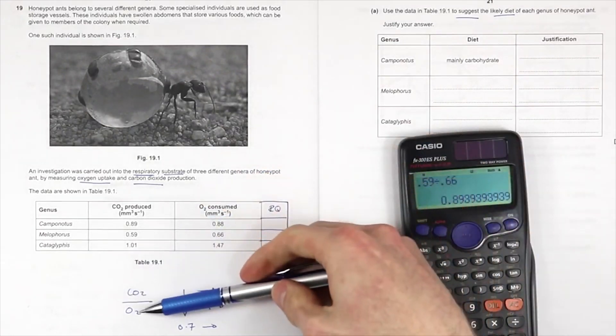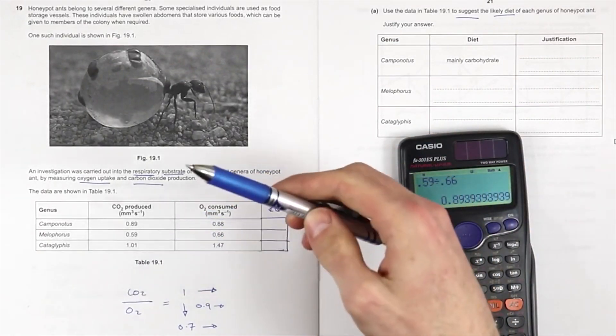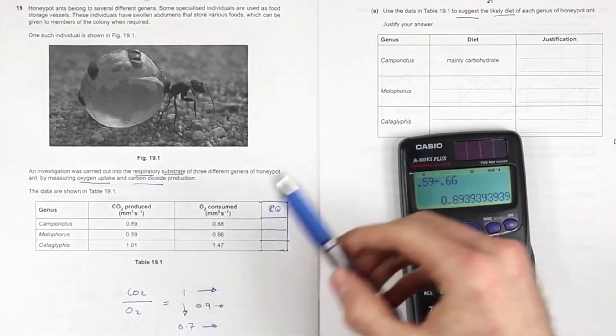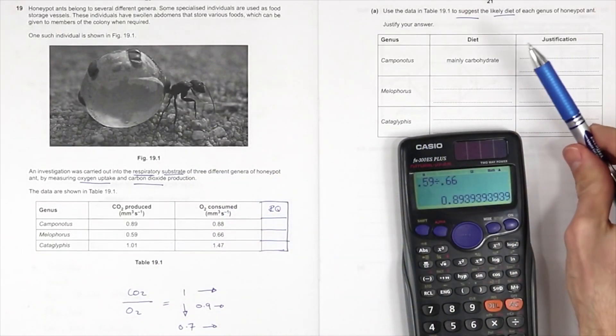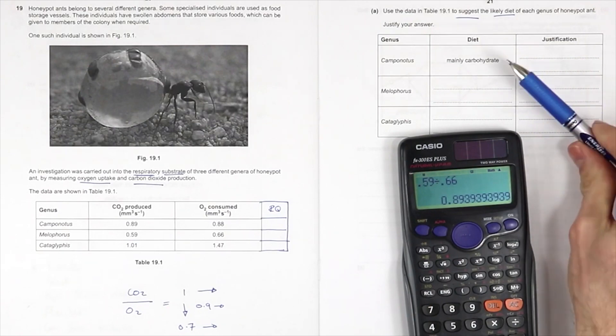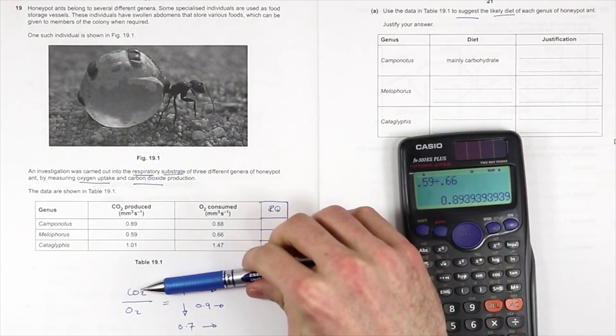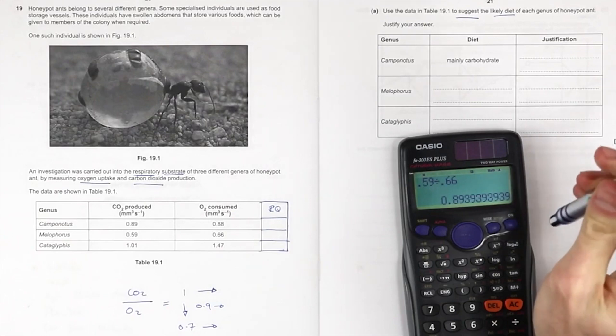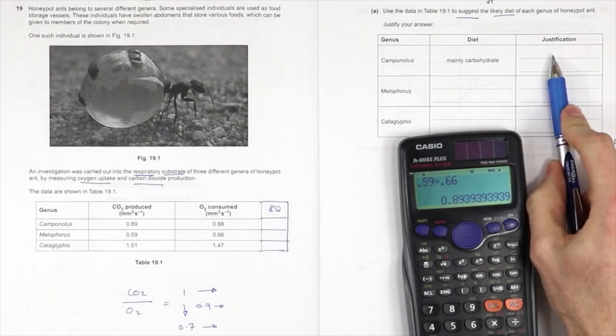So if the volume of carbon dioxide produced equals the amount of the volume of oxygen consumed, then if you have a one-to-one ratio, then you're respiring carbohydrates because you produce an equal number of carbon dioxide molecules when you're respiring carbohydrates.